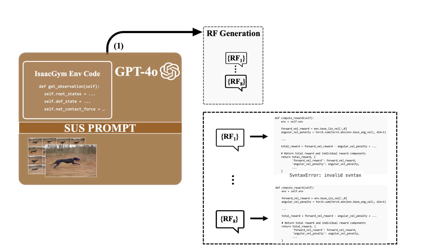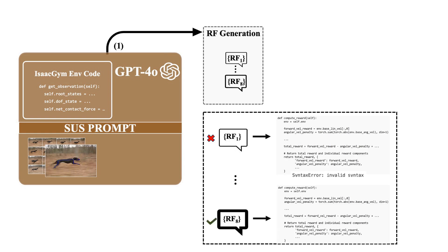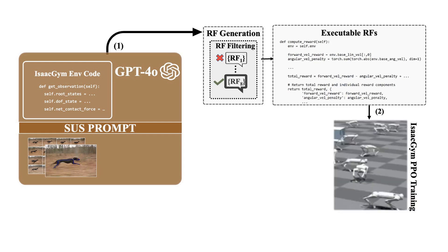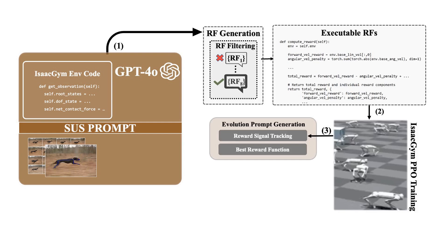The reward functions include many subcomponents and are filtered to ensure they are Python syntactically correct by checking for traceback errors. The executable ones are used to drive 1,000 iterations each of the Go1 robot PPO training within the Isaac Gym environment. At each sub-step, the reward signals of the subcomponents are tracked.